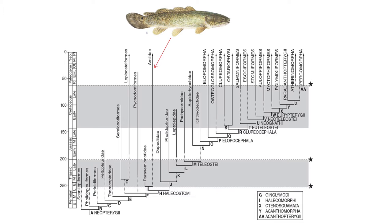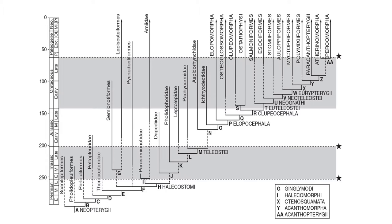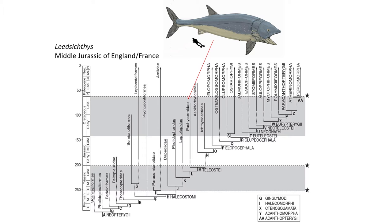We also have a number of completely extinct Mesozoic fossil fish groups, including the Dapidae, the Pholidophoridae, the Lepisolepidae, and the Pachycormidae, near the base of the Teleostei clade. These fish still maintain a primitive mouth with a semi-mobile maxillary bone. One group, the Pachycormidae, got really, really big during the Jurassic.